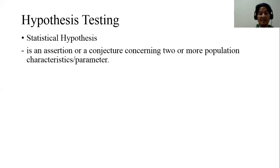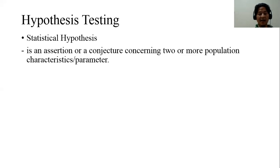When we assert about population parameters, we are saying they are maybe the same or different. If we assert that a certain parameter becomes less than or greater than another value, we can compare not only two populations but also more than two.